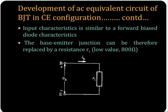Now we have to see the input side. You know that the input characteristics are similar to a forward bias diode characteristics. So the base emitter junction can be replaced by a resistance with a low value, typically 800 ohm.